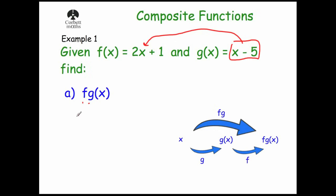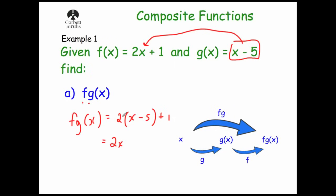So fg of x equals — we look at our f of x function which is 2x plus 1, but we're going to put in the g of x into that for the x. So we write 2 bracket x minus 5 close bracket plus 1. And when we expand that, we get 2x minus 10 plus 1. So overall, fg of x is equal to 2x minus 9.